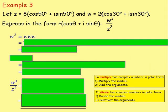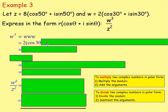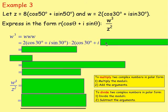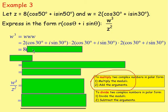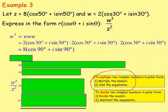W is 2(cos 30 + I sine 30), so W cubed is 2(cos 30 + I sine 30) times 2(cos 30 + I sine 30) times 2(cos 30 + I sine 30). Because we are multiplying three complex numbers in polar form, we multiply the moduli and add the arguments. So 2 times 2 times 2 gives us 8, and 30 plus 30 plus 30 gives 90. So W cubed equals 8(cos 90 + I sine 90).